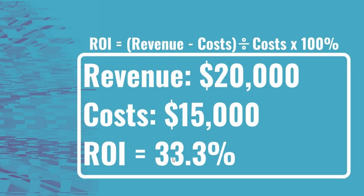My ROI is 33.3%. The way we got that is by using the ROI formula: you want to take your revenue and subtract costs first — that gives you your profit — then divide it by your costs, and multiply by 100% to get an actual percentage. Your ROI should be shown as a percentage because you're looking at what your total return is for your initial investment.